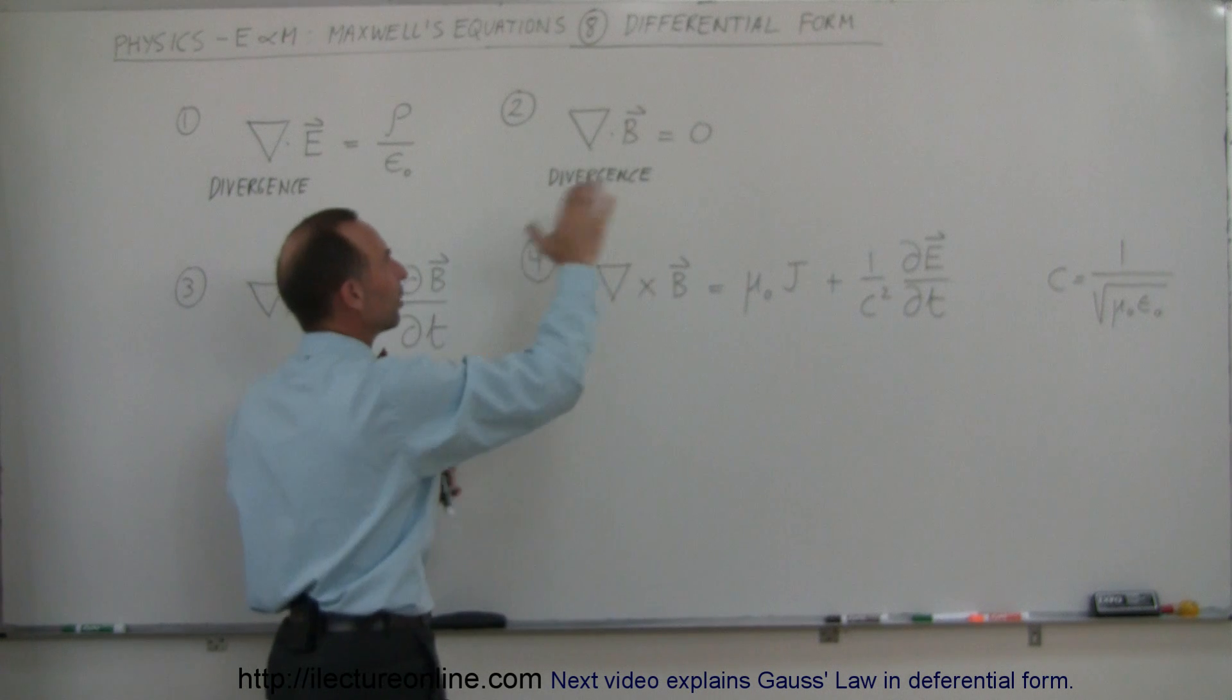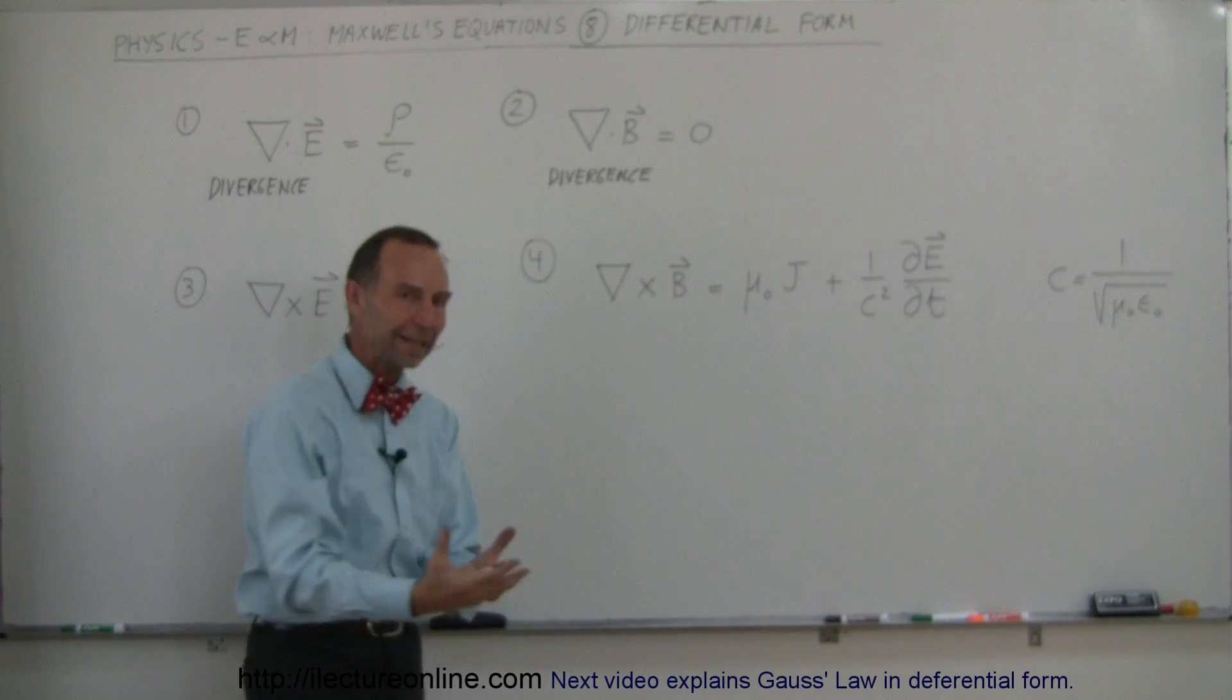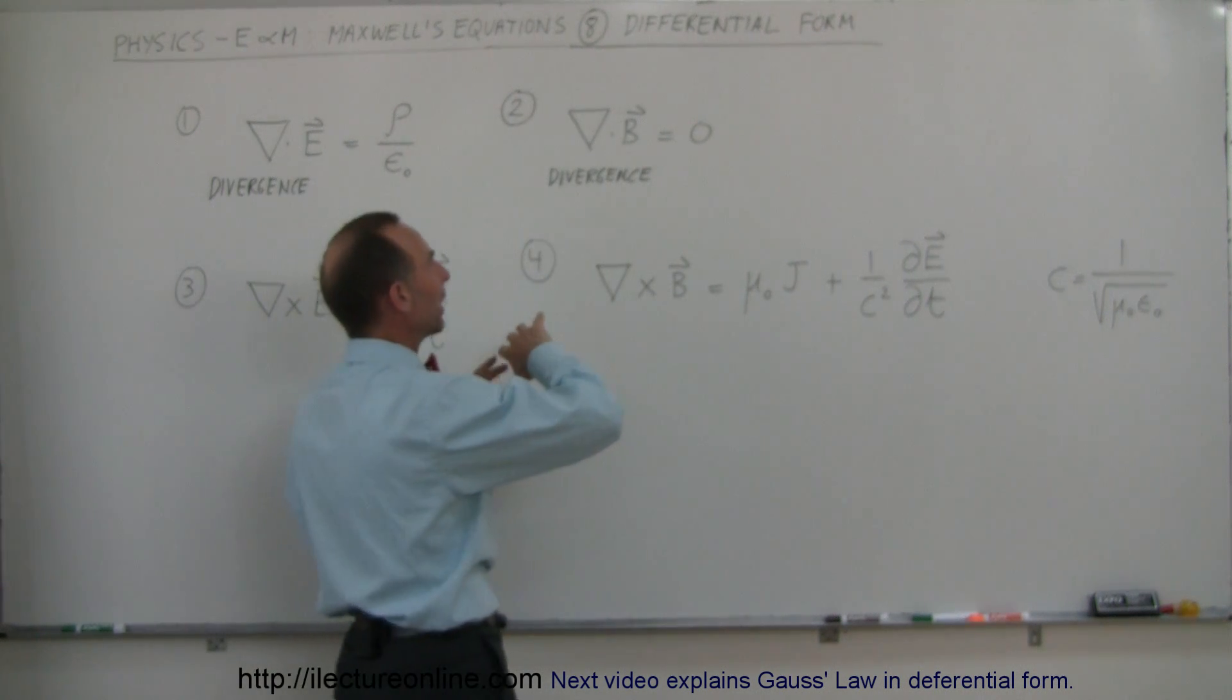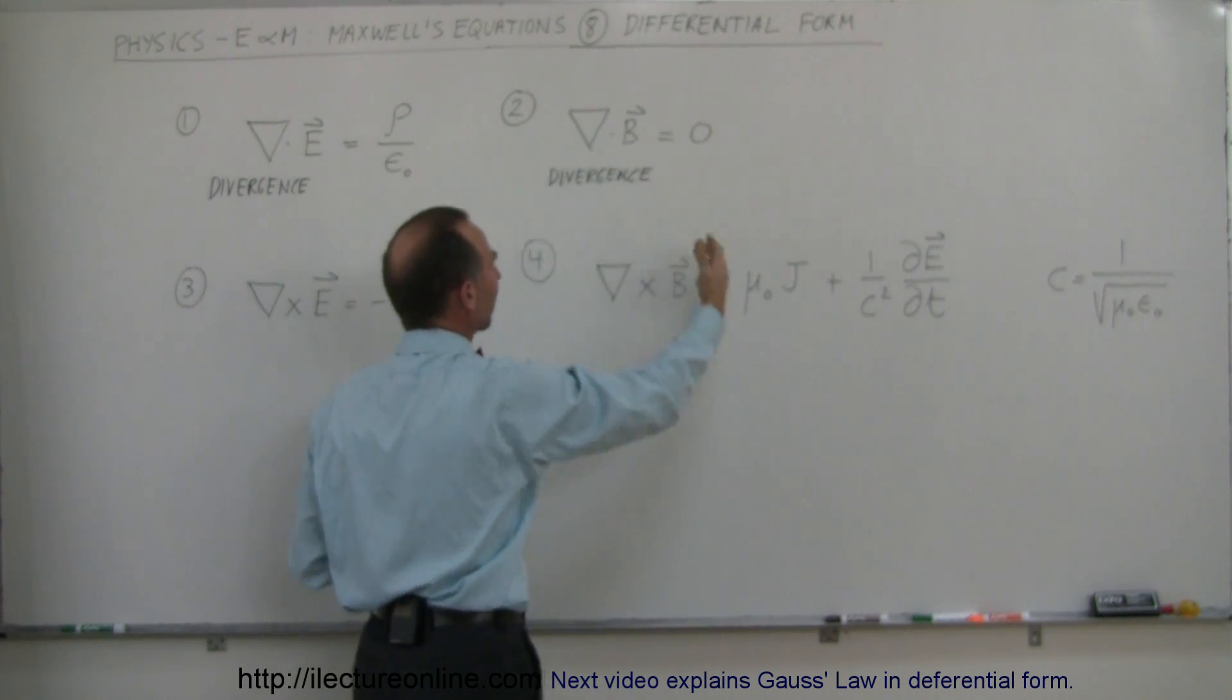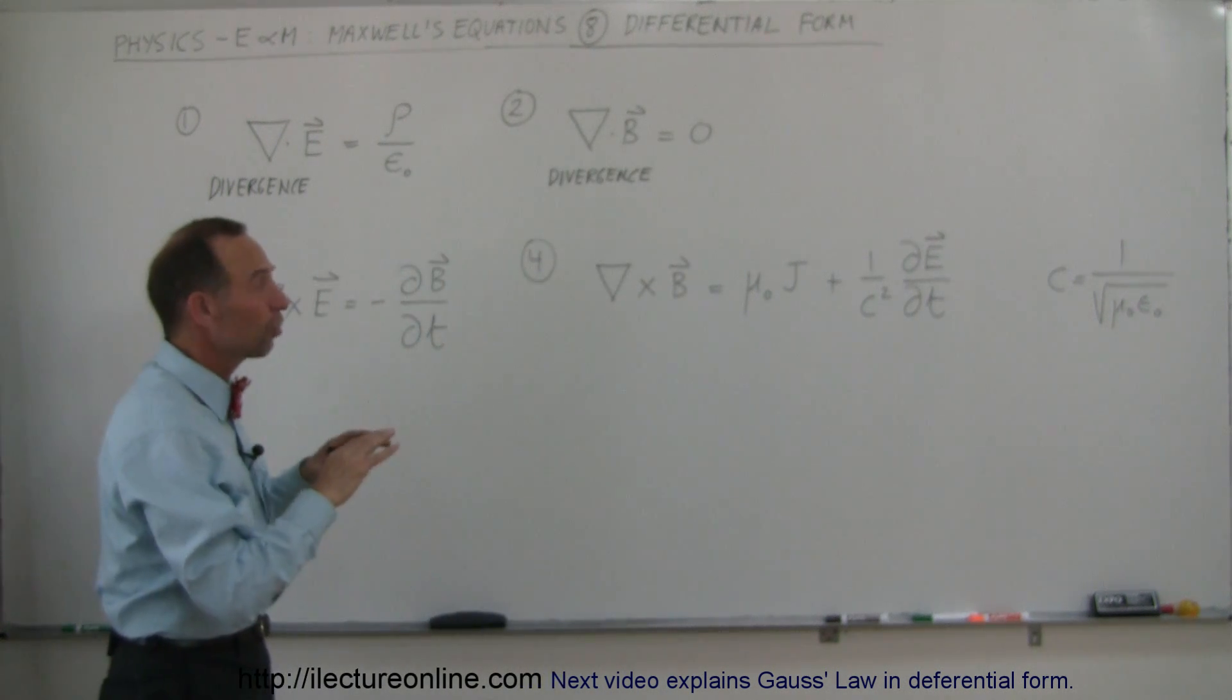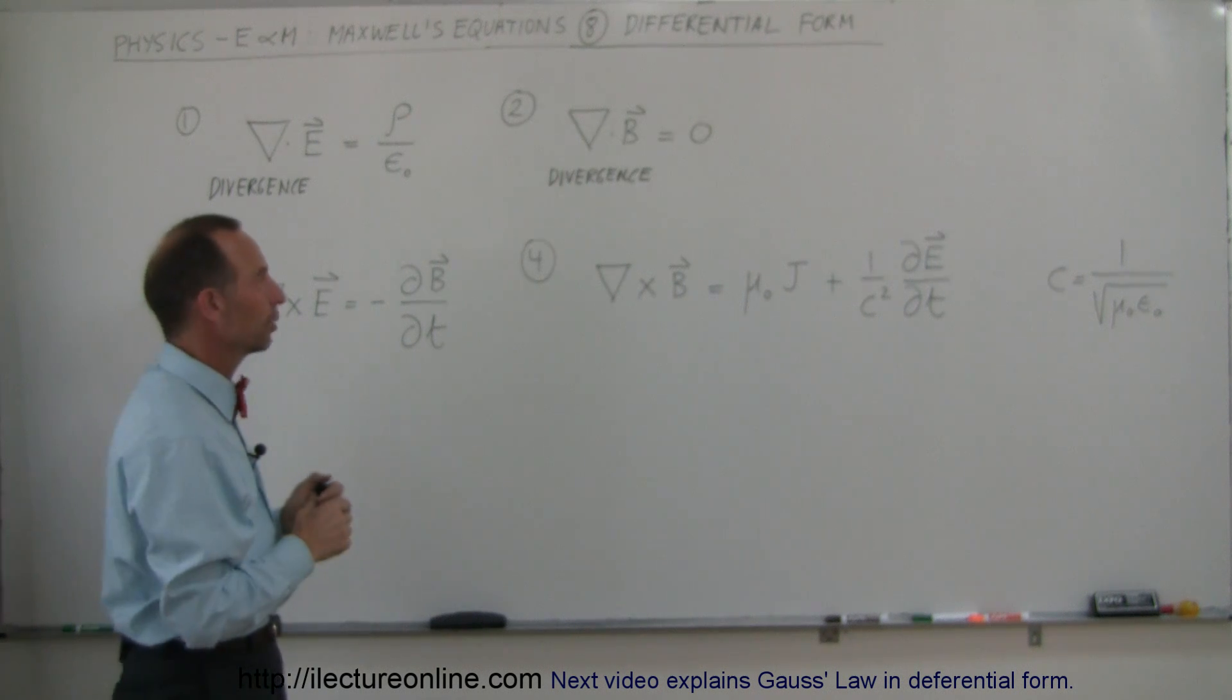Just like before when we had the surface integral we took a Gaussian surface, put it around a certain magnet or around a certain portion of magnetic field, and then if we integrated the strength of the field anywhere along the surface and integrated that over the entire surface we would find that it's always equal to zero because there's no such thing as a monopole magnetic field anywhere in the universe.